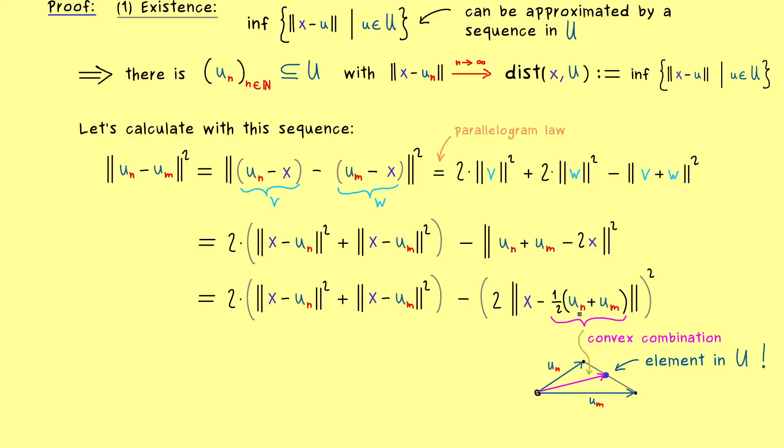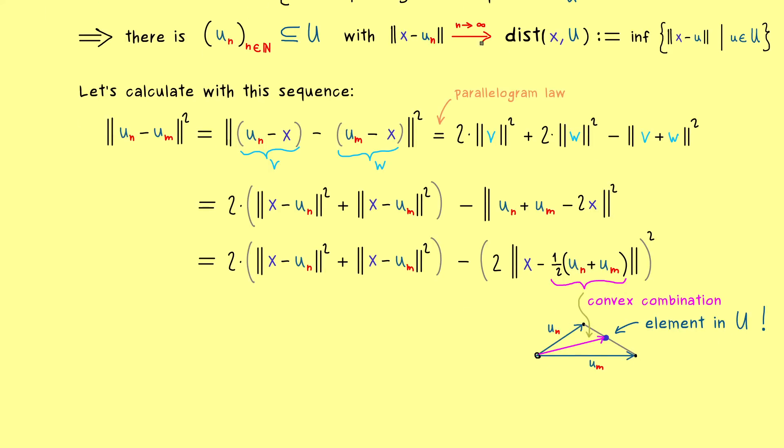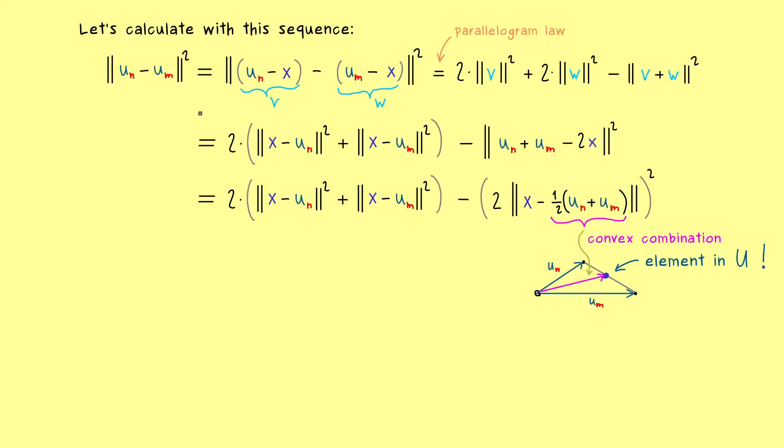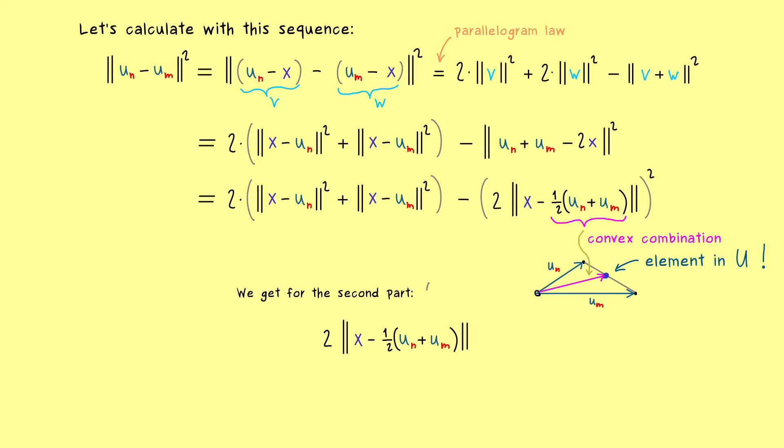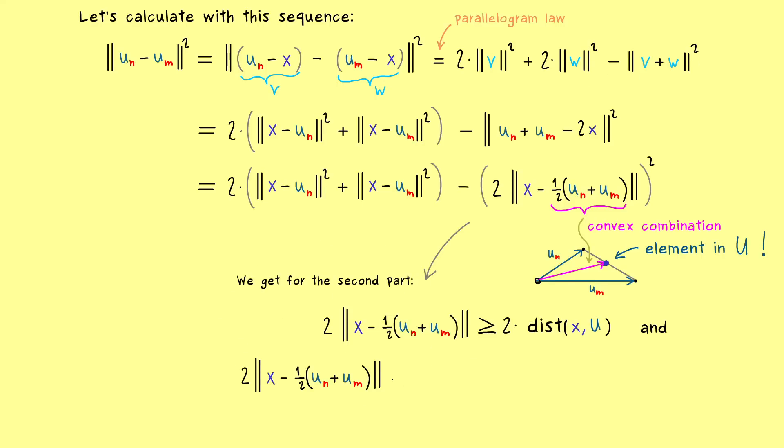So the whole thing holds for every n and m. Which is important because in the end we want to send n and m to infinity. Therefore let's see what we can say about this second part. First of all the definition of the distance between x and U is given by an infimum. So we already know that this norm here is definitely larger or equal than this infimum. In other words if the limit exists we already have a lower bound here. So the question is can we also get an upper bound?